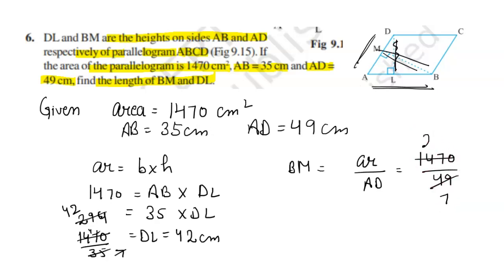Dividing: 49 goes into 147 twice (98), leaving 49, which equals 30 cm.